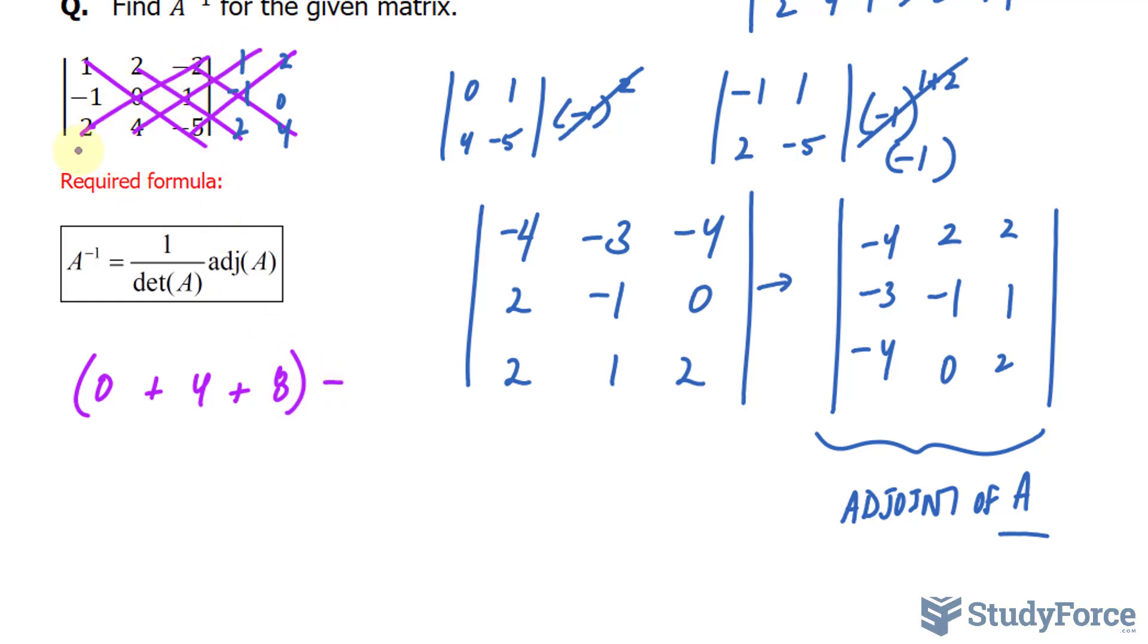Now we'll multiply negative 2 times 0 times 2, that's equal to 0. 1 times 1 times 4, 4. 2 times negative 5 is negative 10, times negative 1 is positive 10. This leaves us with 12 minus 14, that means the determinant of A is negative 2.